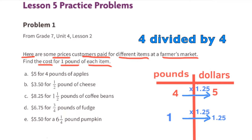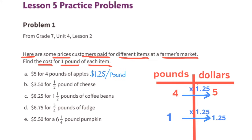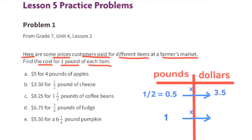Part a: five dollars for four pounds of apples. Four pounds of apples divided by four equals one pound of apples. Five dollars divided by four equals a dollar twenty-five. So apples are a dollar twenty-five per pound.